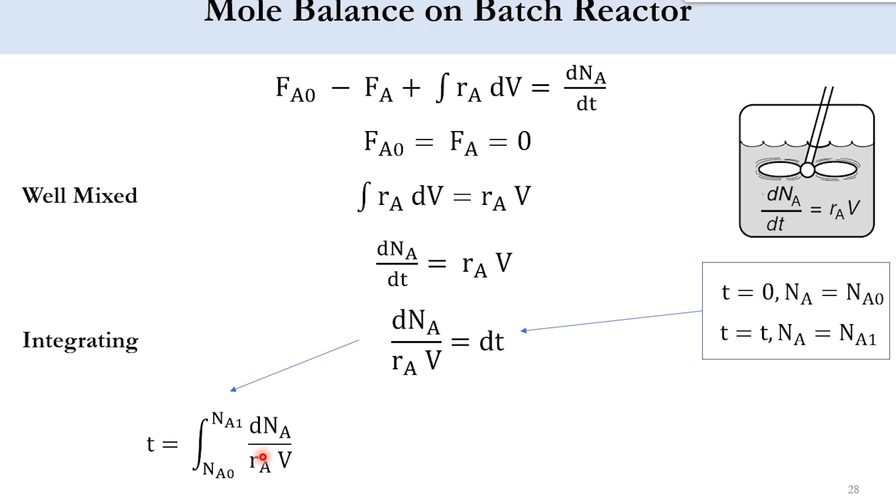However, if you remember in our previous lecture, this r_a represents the rate of disappearance because it is for the reactant. If here it was a product then it would be positive, but now we have to make it negative as well. So what we will do is multiply and divide it by negative. Once we divide it, these limits will reverse as we know the simple principle of mathematics. So it will become t equals integral n_a1 to n_a naught d n_a over minus r_a V.